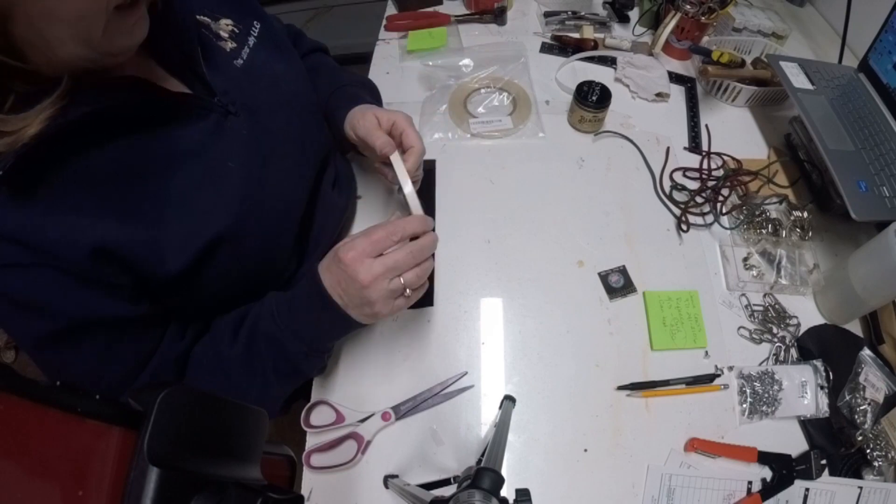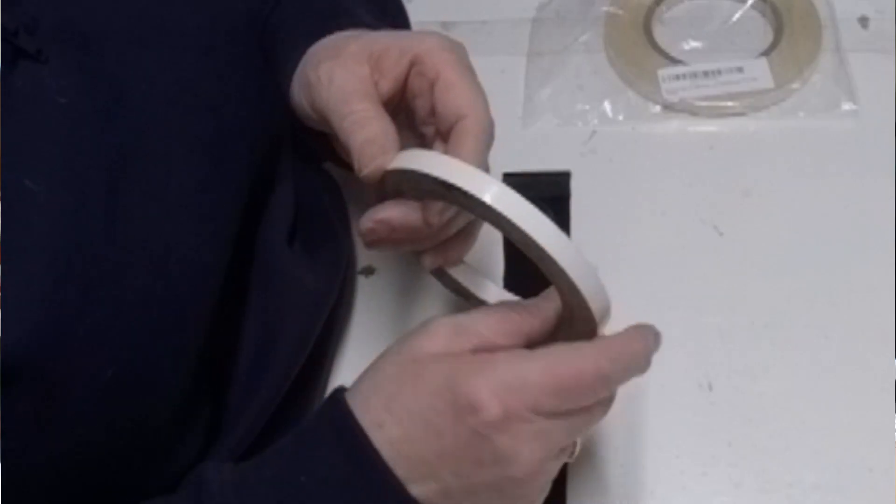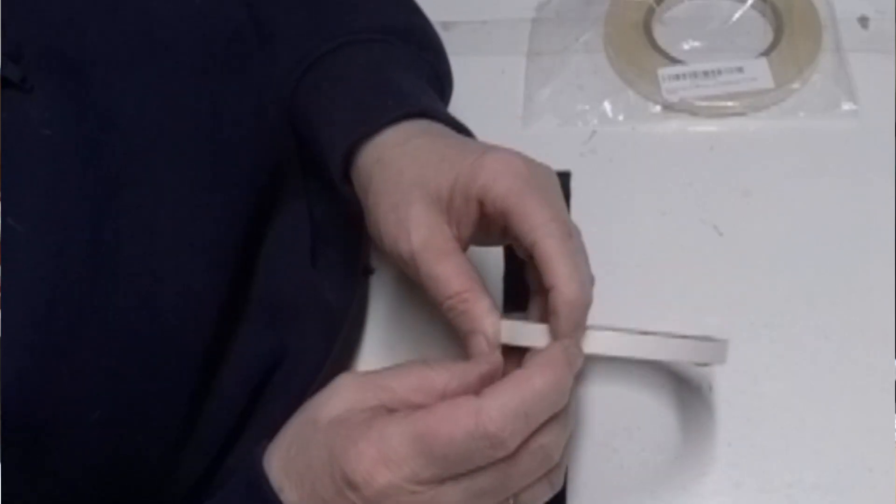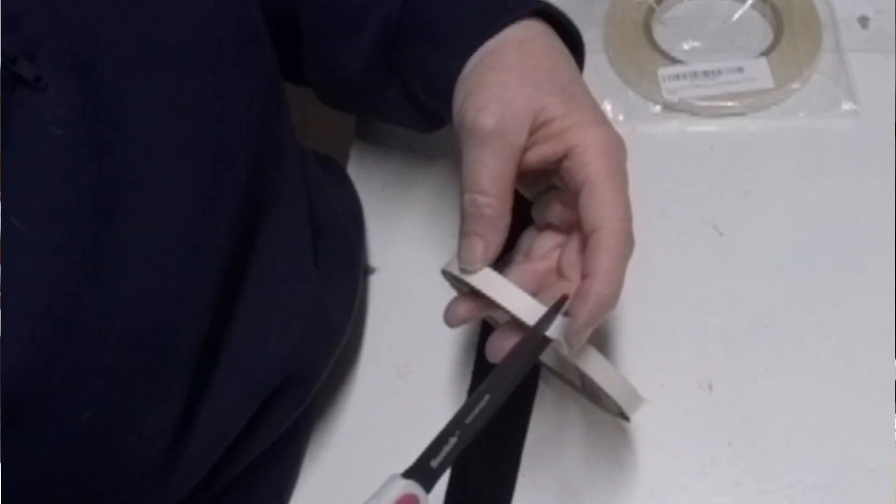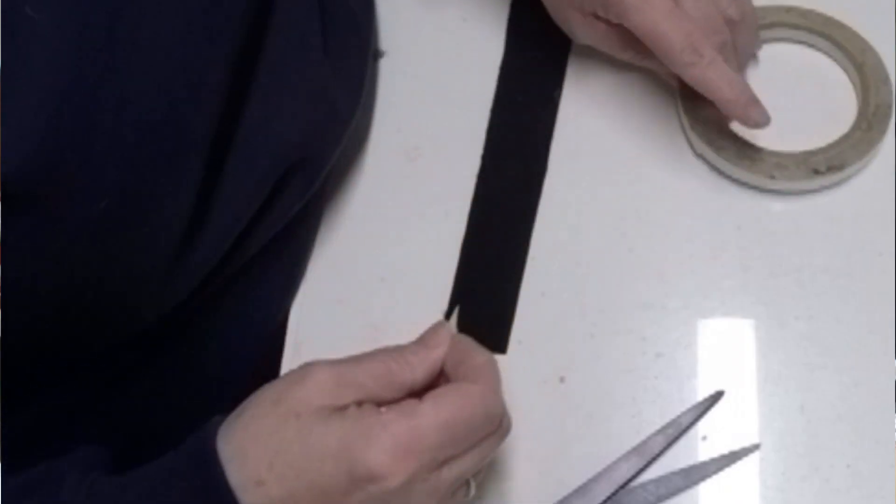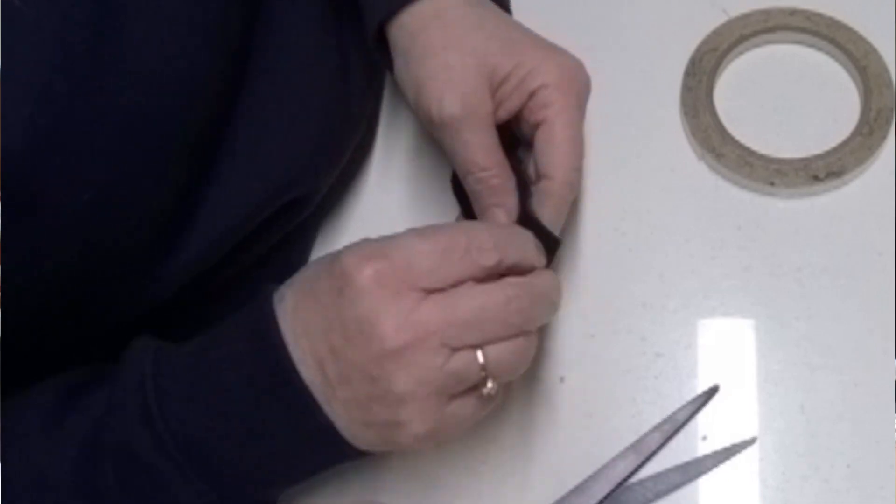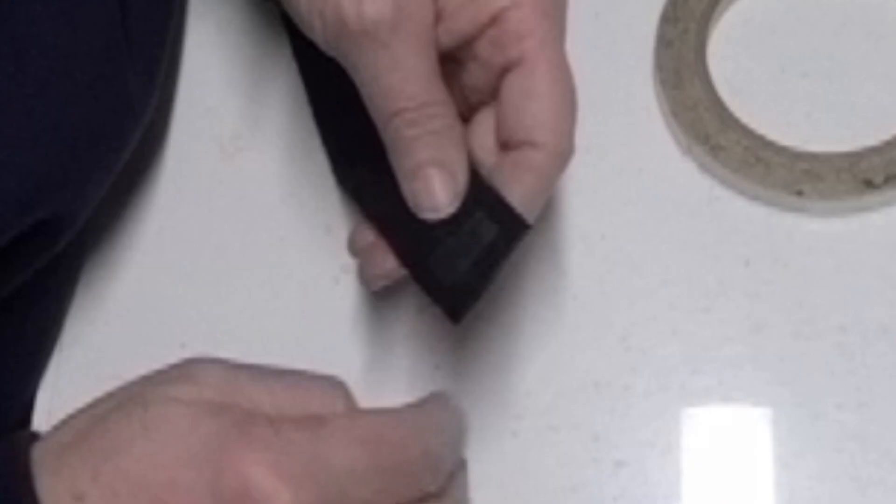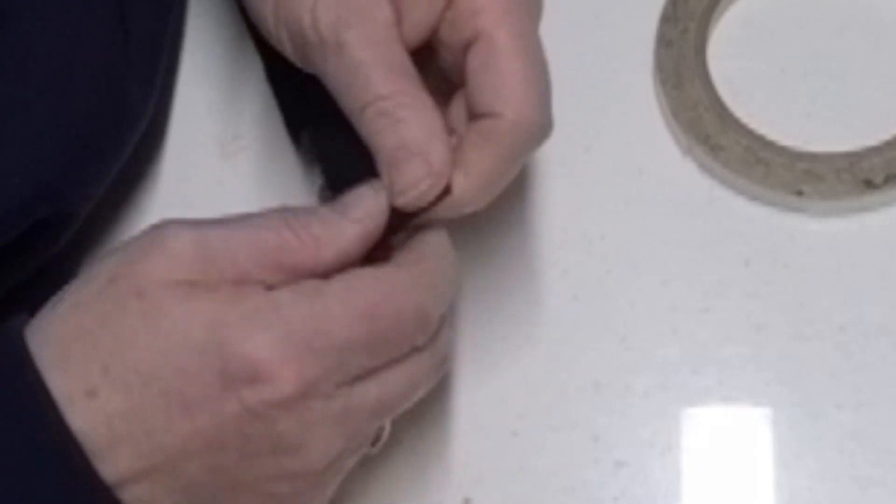It works the exact same way. So all you're going to do is take a little piece off. If you're going to tack something down to get ready to sew, you can go ahead and do that. And you're just going to peel that off and voila, it's tacked down.